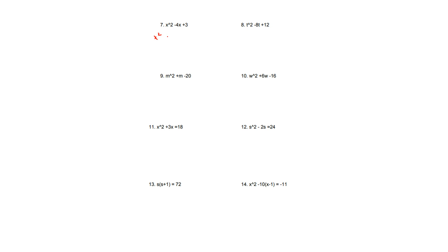Number 7, we have x squared minus 4x plus 3. The factors of 3 are going to be 3 and 1. Except this time we have to make them add up to a negative number. Since we have a positive 3, in order to multiply into a positive number but add up to a negative number, both factors have to be negative. So it's going to be x minus 3 times x minus 1, because negative 3 times negative 1 is positive 3, but if you add them together it's negative 4.